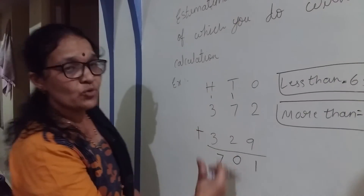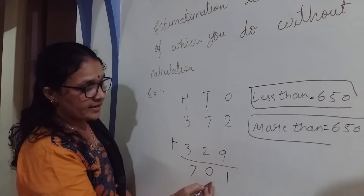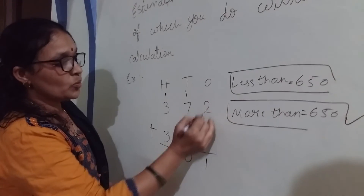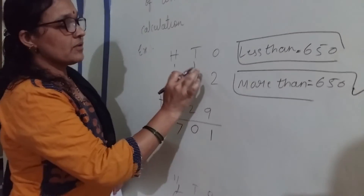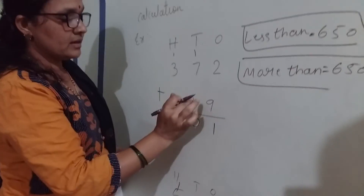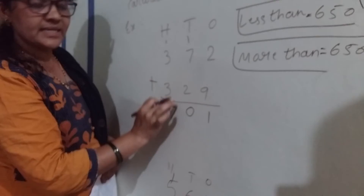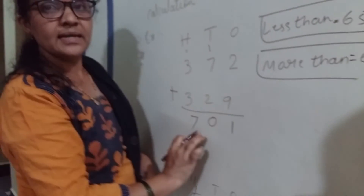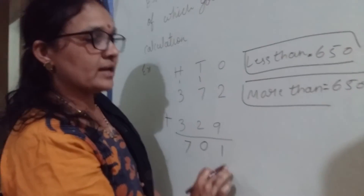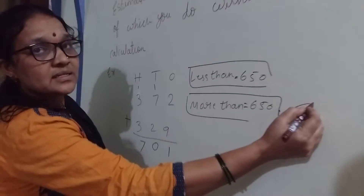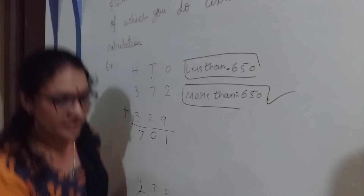Now add: 2 plus 9 is 11. Carry 1. 7 plus 8 is... carrying through: 3 plus 3 is 6, 6 plus 1 is 7. So the answer is 701. This is more than 650.